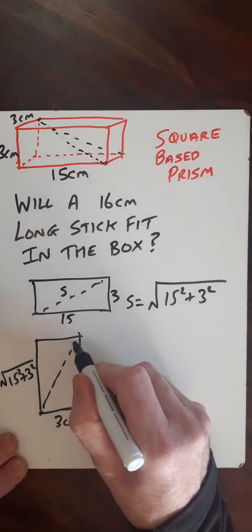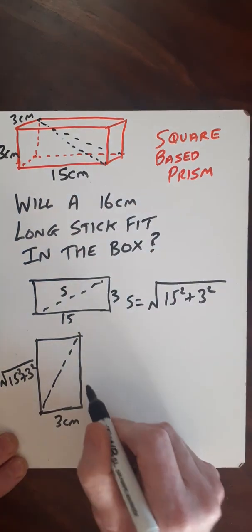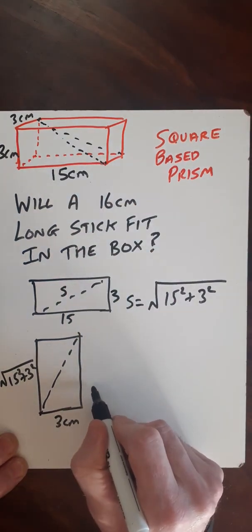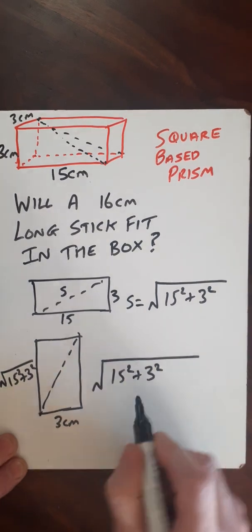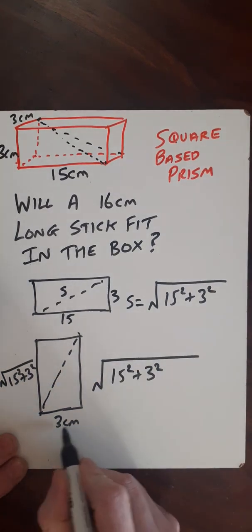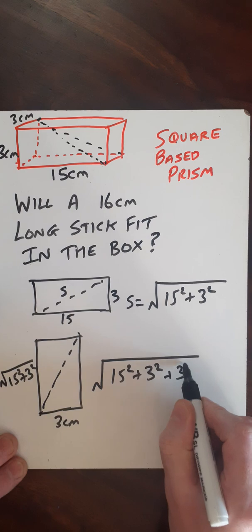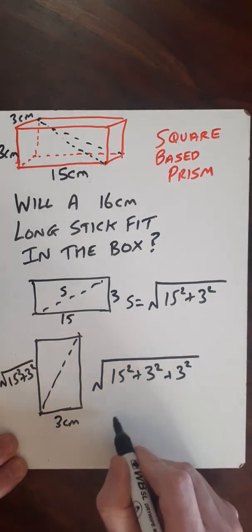Now to find that dimension that we wanted right from the beginning, the full dimension will be taking the sum of the squares - to square this, I'll have 15 squared plus 3 squared, and the square of this will be 3 squared. So then put that in a calculator.